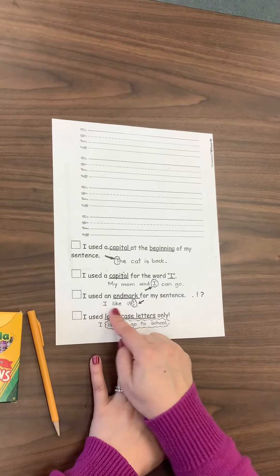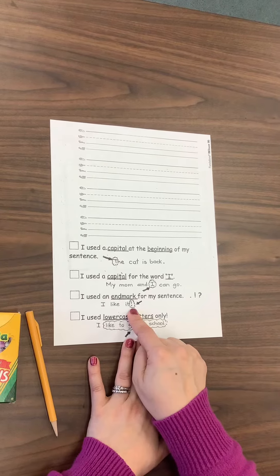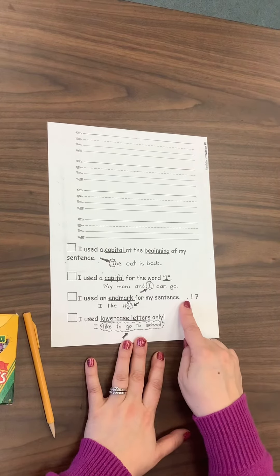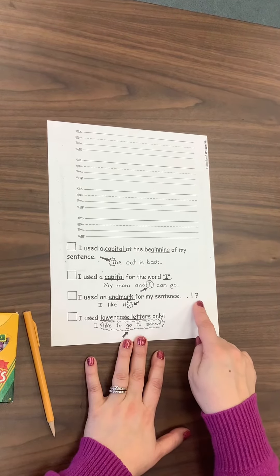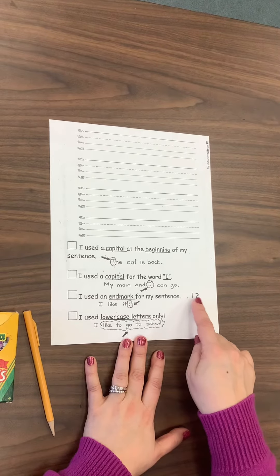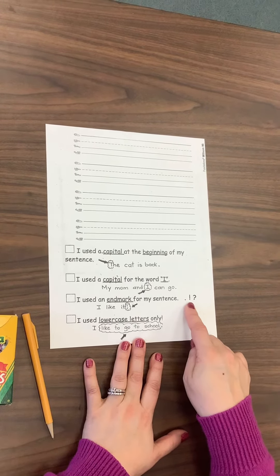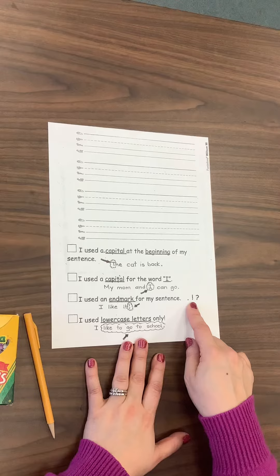You're going to make sure that at the end of your sentence, you have an end mark. It'll either be a period, an exclamation point, I don't think you'll end up using a question mark. It'll probably be a period if you're telling us, or an exclamation point if you're really excited about what you did.